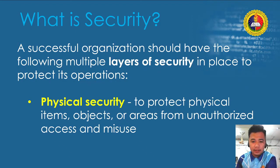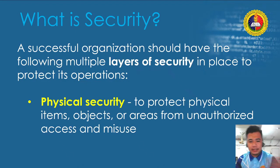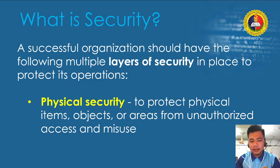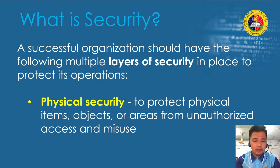First, we have security guards to monitor who enters the campus, making sure everyone and everything inside is safe. Then we have CCTV cameras that monitor all movements inside the campus. These are examples of physical security. Those would be the two main examples of how the university protects its physical assets.